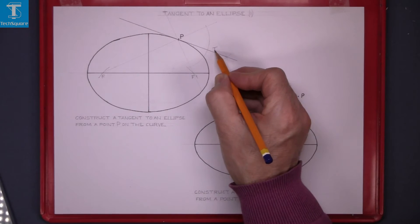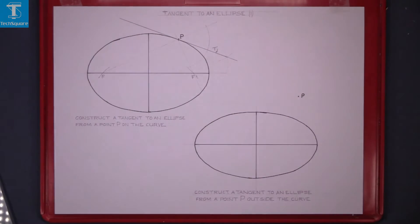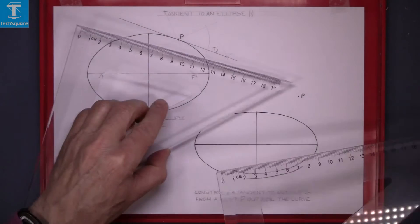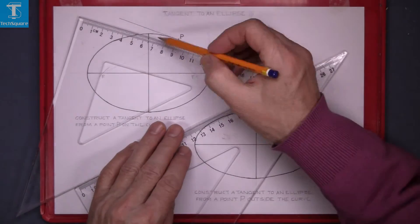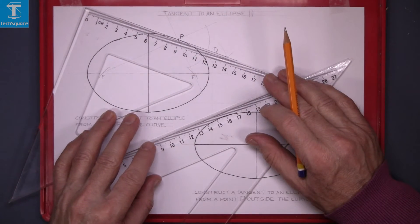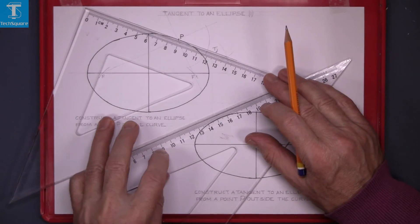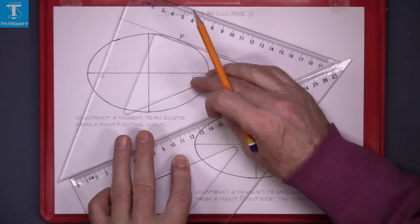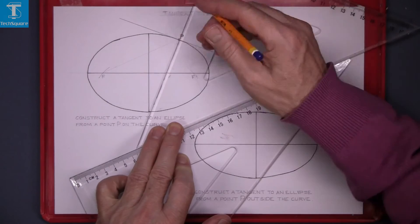Now a normal to a tangent is at 90 degrees to a tangent. So set the two set squares. Line up with the tangent. Hold the lower set square and slide the top one. And that's a normal.